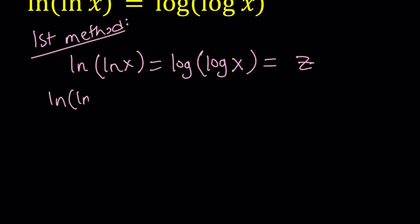First of all, ln ln x equals z. Now, since the base is e here, that means ln x is equal to e to the power z, and since the base is e again, that means x is equal to e to the power e to the power z. Awesome.